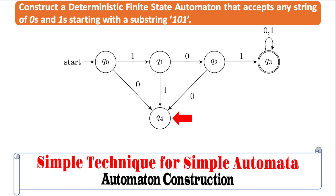As for the dead state q4, we still need to provide a path for 0 and a path for 1, because we are constructing a deterministic finite state automaton. Any succeeding inputs of zeros and ones will always loop back to the dead state, because the string formed can never form a string starting with 101. So the final DFA that accepts any string of zeros and ones starting with 101 looks like the one shown on the screen.